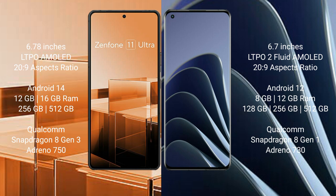The OnePlus 10 Pro runs on Android 12. It comes with 8GB or 12GB RAM, 128GB or 256GB or 512GB internal storage, a Qualcomm Snapdragon 8 Gen 1 processor, and an Adreno 730 (NGP N200930) GPU.